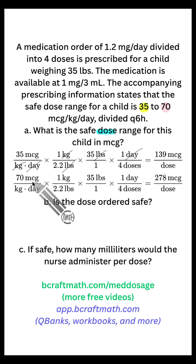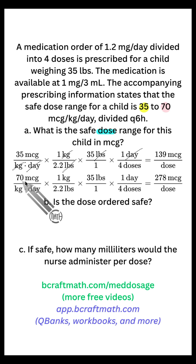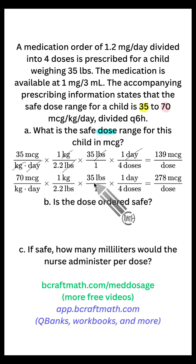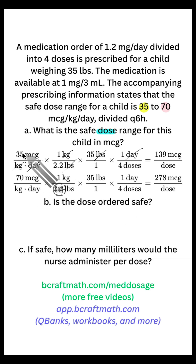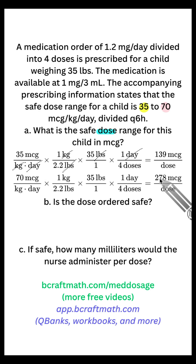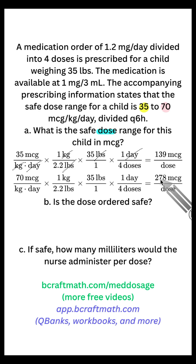In the video prior to this, I did mention swapping in that maximum amount — everything else remains the same. Little shortcut here too: we are essentially just doubling this. Did you notice that 70 is double 35? This 278 is double that lower amount. So anything in this range will be considered safe.